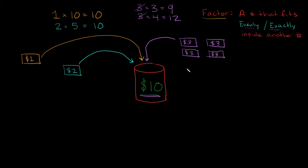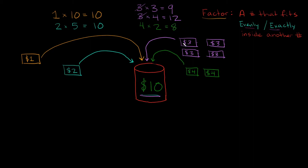What if I had a $4 bill? How many $4 bills could I fit inside of my $10 bucket? I could fit two, giving me $8. But if I put in a third one that gives me $12, which is the same problem — I go over again. So $4 bills don't fit exactly or evenly inside of my $10 bucket.